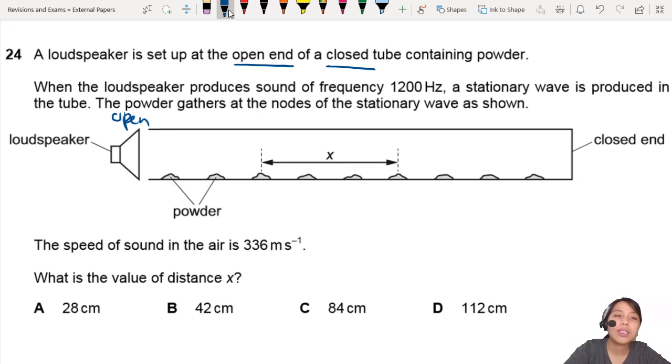So when a loudspeaker produces a certain frequency f, a stationary wave is formed inside there. The powder gathers at the nodes.